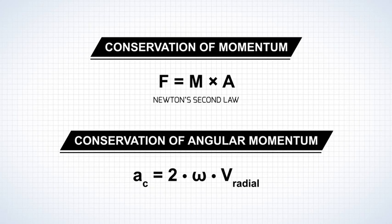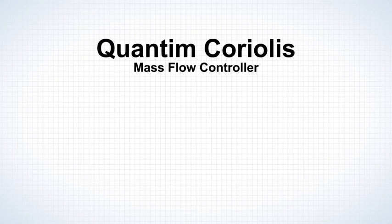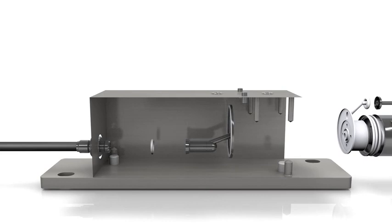We'll circle back to this as we explain how the quantum Coriolis mass flow controller works. The basic construction consists of four main components: a flow body,